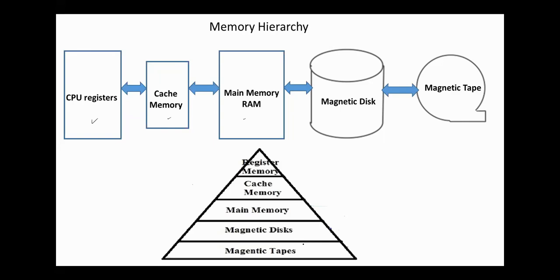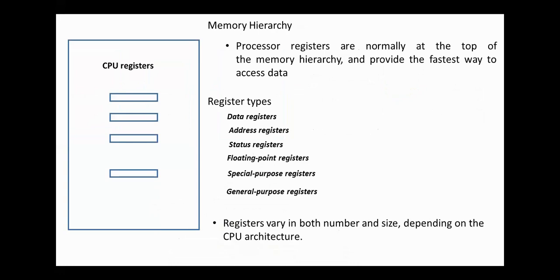Several text boxes represent the hierarchy in a pyramid form. CPU registers are normally at the top of the memory hierarchy and provide the fastest way to access data.